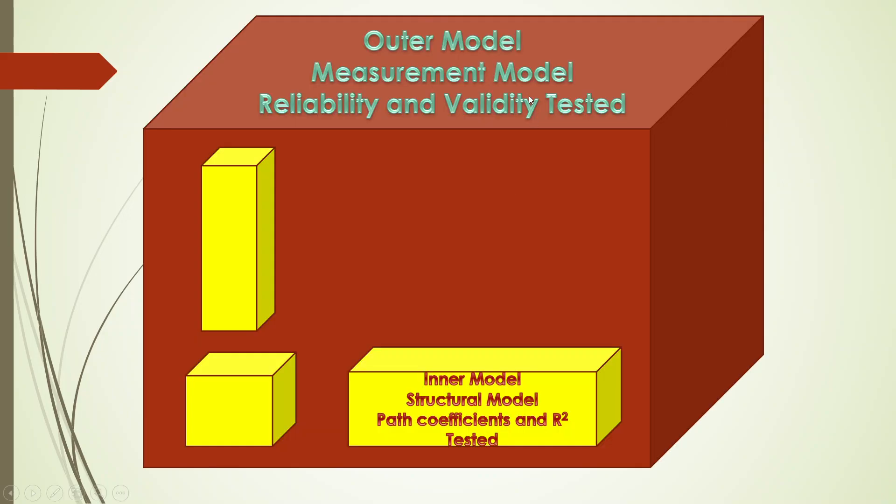Now if I represent this thing in form of a home, let's say that this is your home and when I am trying to study about the outer model which is known as a measurement model, I want that my outer walls should be very tough. My outer walls of the home will be very tough and therefore when I am trying to study about the measurement model, the statistics or what I will do is I will study the reliability and the validity of the outer model or the measurement model.